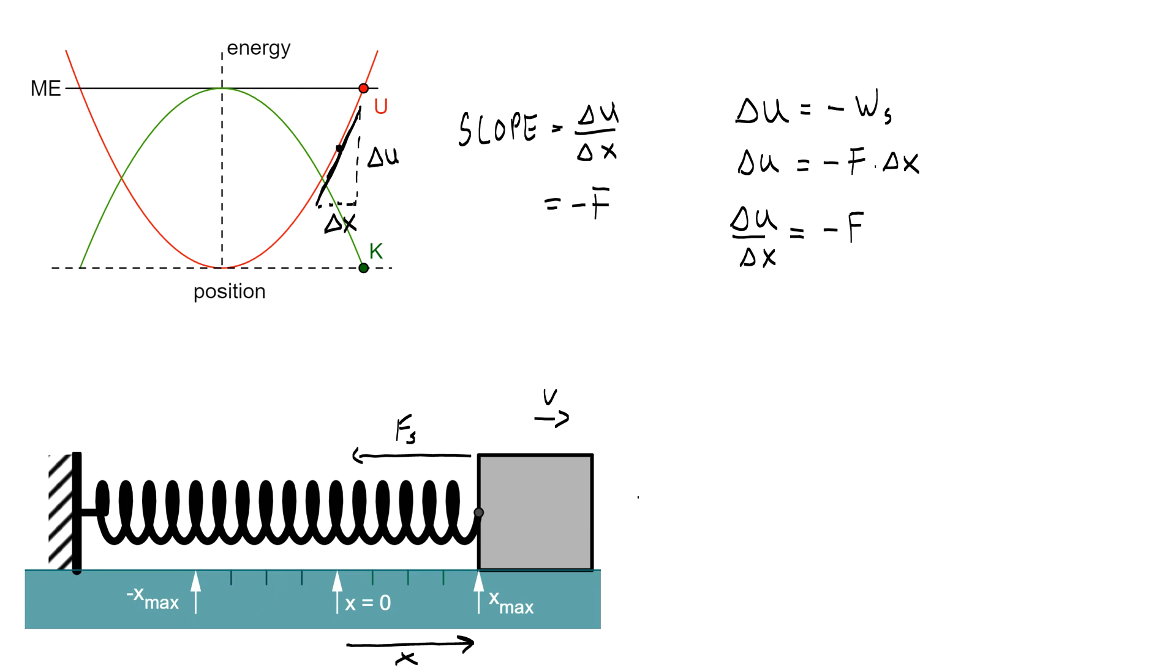Remember that we have a way of expressing finite changes or deltas as infinitely small changes or infinitesimal changes. So instead of delta u over delta x, I could say, well, as the change in x approaches the limit, that's delta x approaches zero. So the change in x gets really, really, really, really small. We can really just call that du dx, and that's going to be equal to the negative force. So this is your new thing to think about. The slope of a potential energy versus position graph is going to tell you the negative of the force.